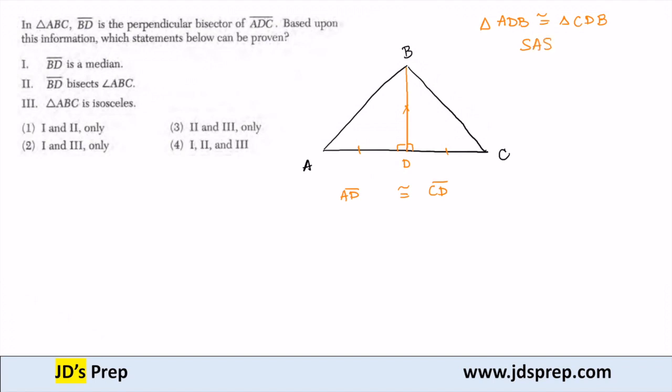So because they're congruent, now we can find other congruences in the triangles. So BD bisects angle ABC. Well, I know that angle ABD has to be congruent to CBD because the triangles are congruent. Because those two angles are congruent, then BD must be a bisector of that angle, so that must be true.